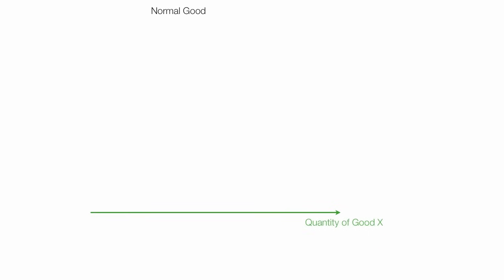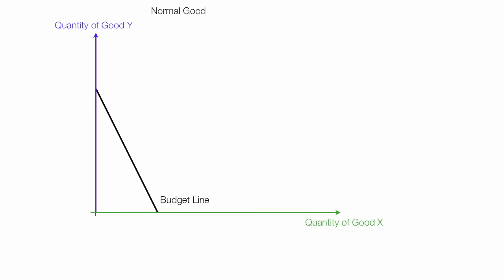I'm going to start with a normal good. Along the X-axis, I'm going to have quantity of good X. Along the Y-axis, quantity of good Y, and I'll draw on a budget line and an indifference curve. The consumer will consume at point A and consume four units of good X.